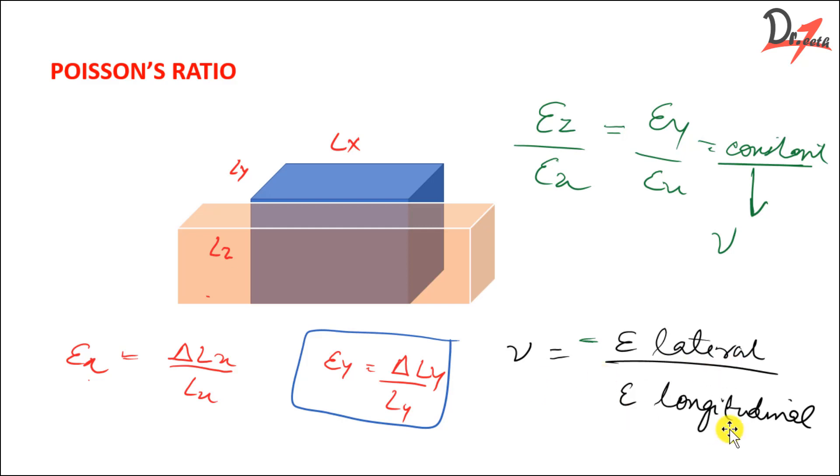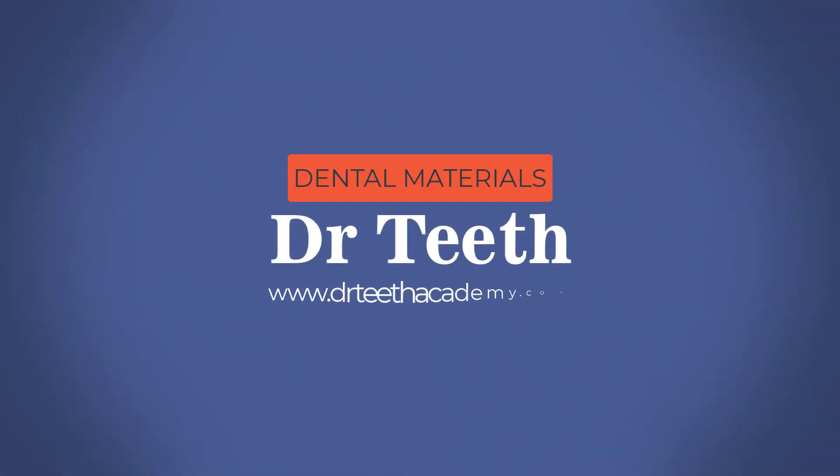To formulate this, we have the Poisson's ratio is the strain in the lateral direction divided by strain in the longitudinal direction. So I hope that this is clear now.